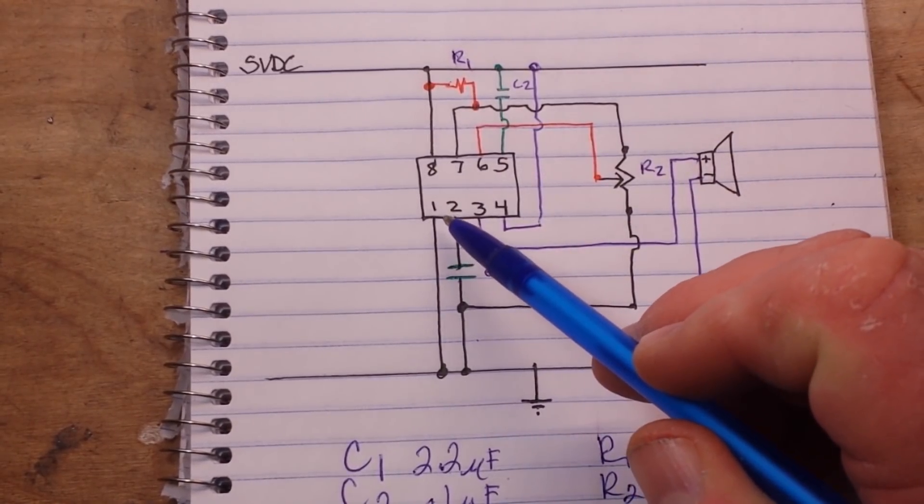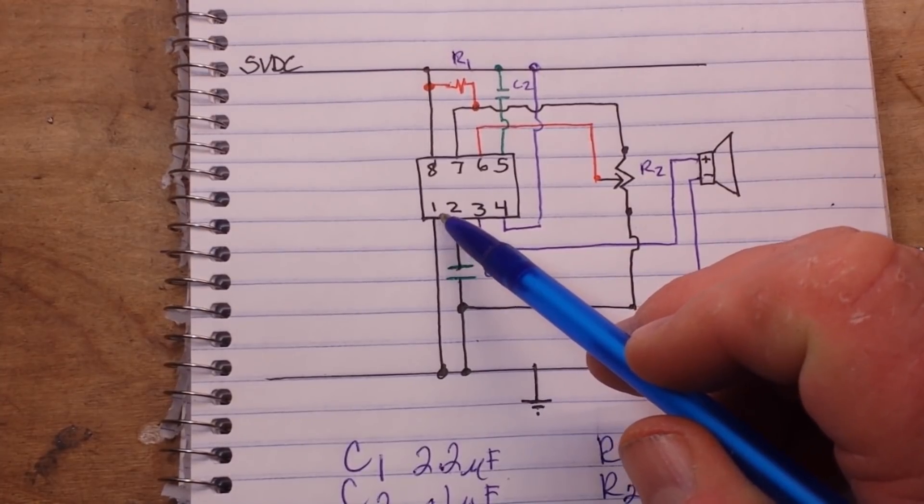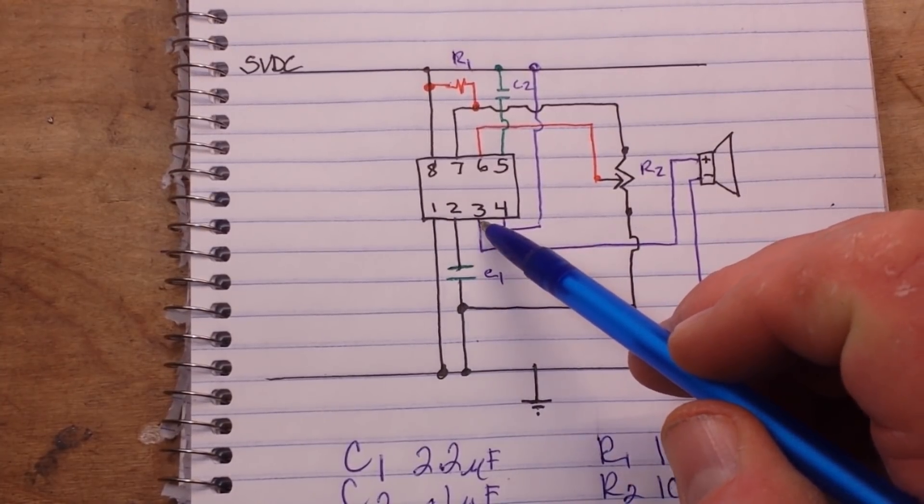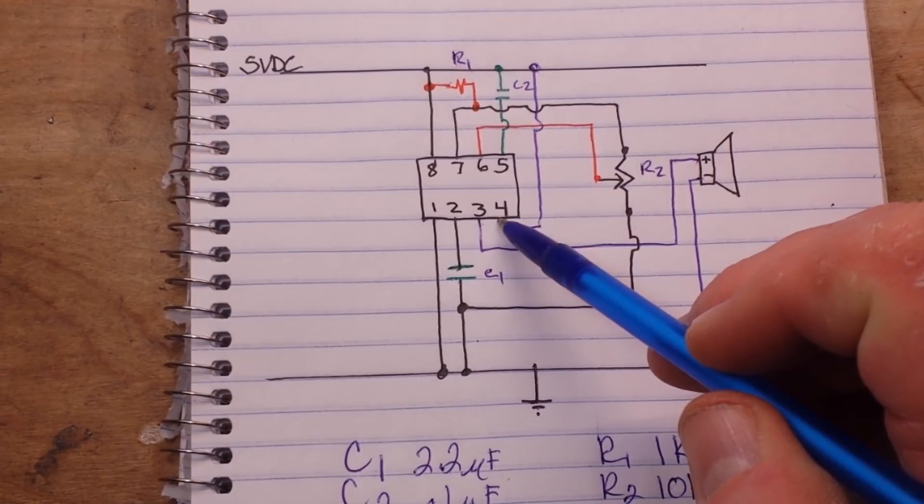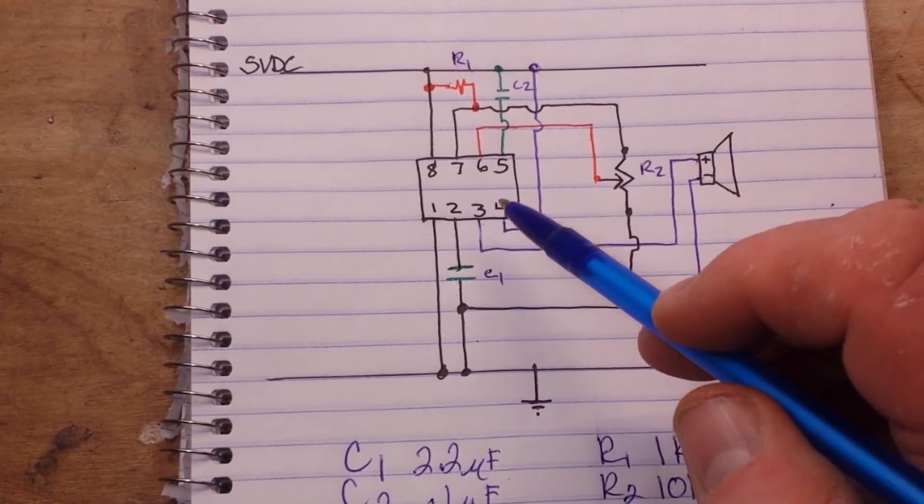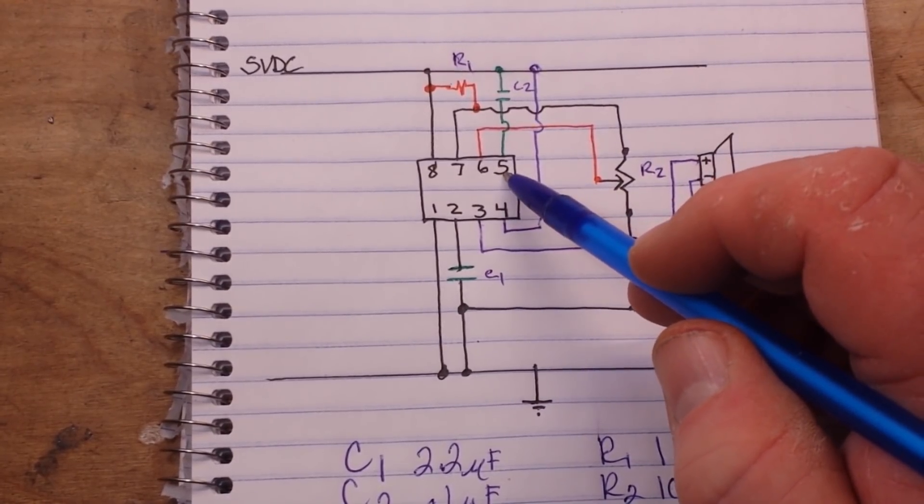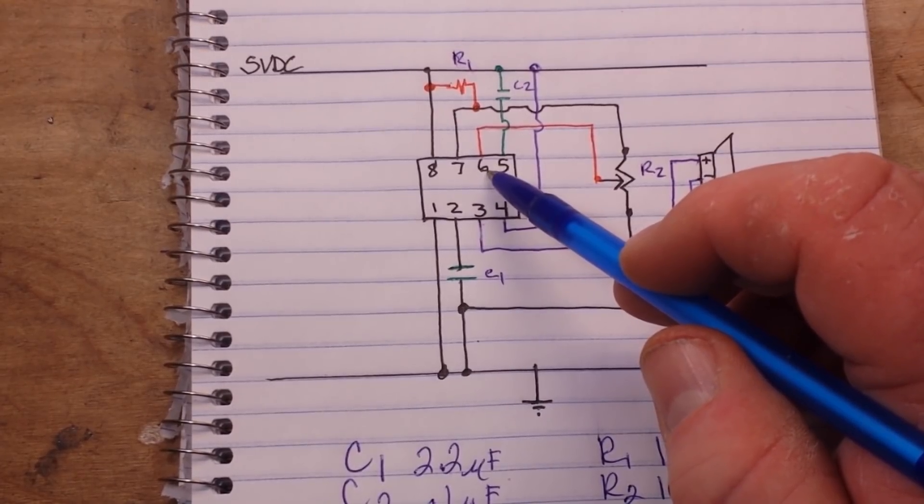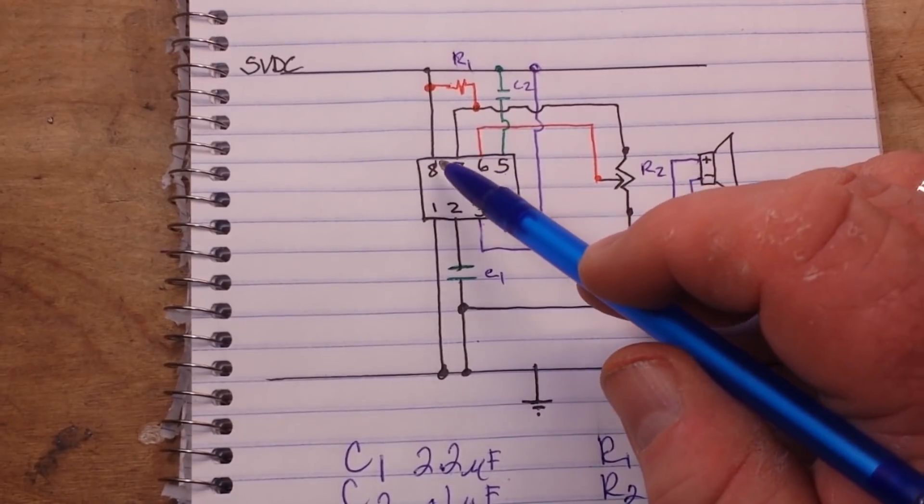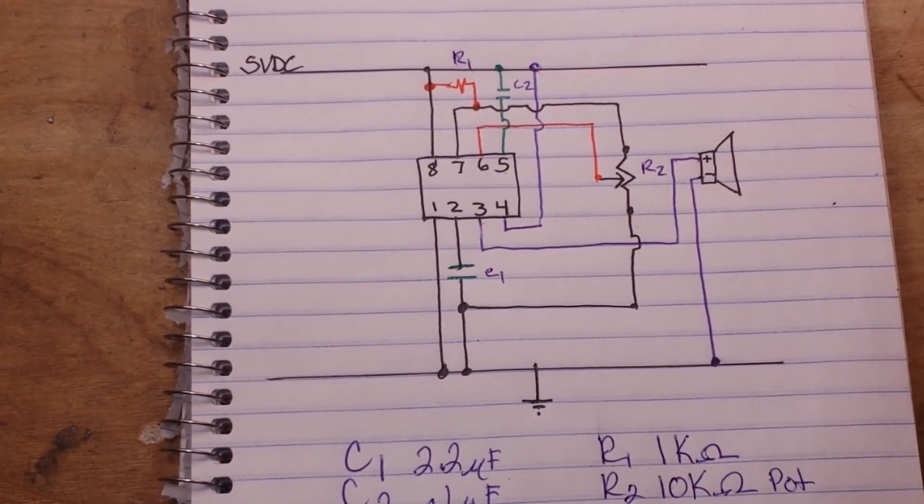It is a little eight pin IC: pin one is ground, pin two is trigger, three is output, four is a reset low, five is control voltage, six is threshold, seven is discharge and eight is VCC.